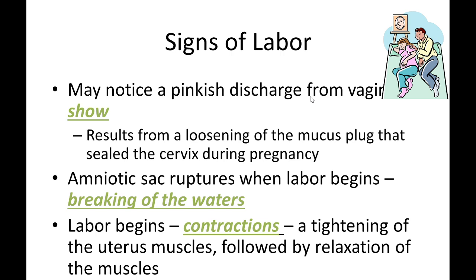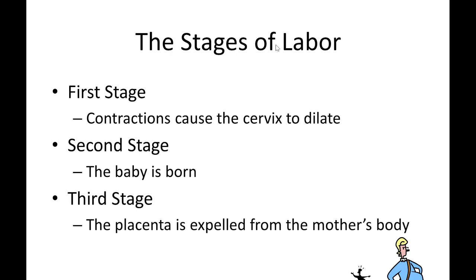If there is a pinkish discharge from the vagina, it is due to the loosening of the mucus plug. If there is a watery discharge, that is due to the breaking of the amniotic sac, or breaking of the waters. These are signs of labor. Labor begins with contractions — the tightening and relaxation of the uterine muscles — as the uterus tries to push the baby out.